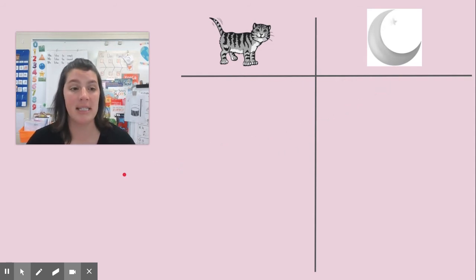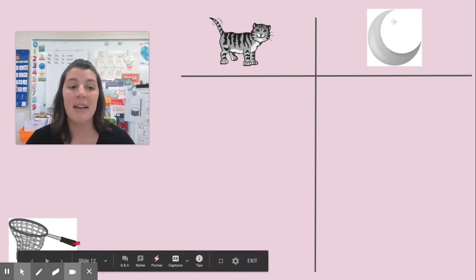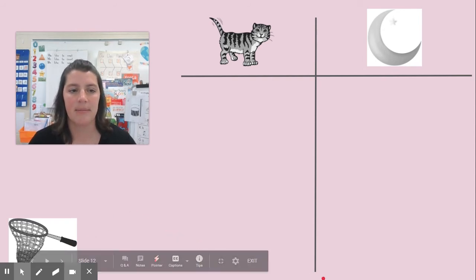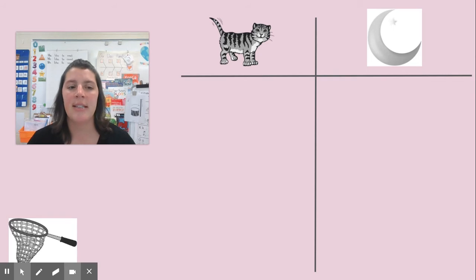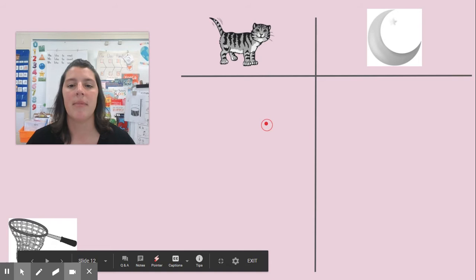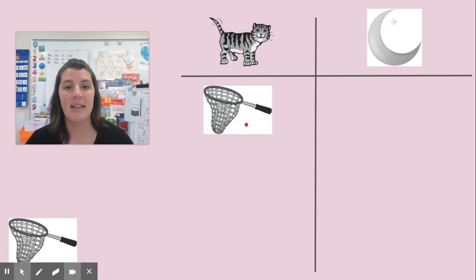Remember, we're listening closely for the sound at the end of the word. Here's our first one. This is a net. Say the word net. When I say the word net, I hear the t sound at the end, just like in the word cat. So, I would put the picture of a net under the word cat, because they both have the t sound.